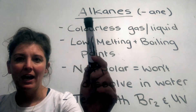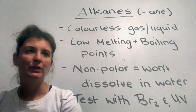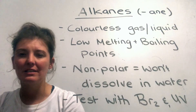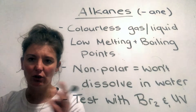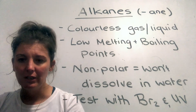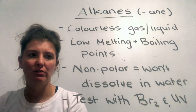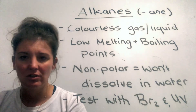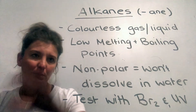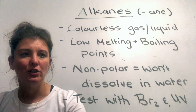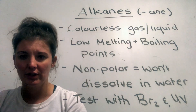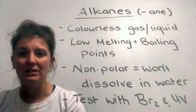In summary: Alkanes are the first group we've studied. They have the surname ending in '-ane'. They are colorless gases or liquids depending on their size. They have a low melting and boiling point. They are non-polar because they have no greedy atoms attached, meaning they are insoluble in water. The only reaction that takes place with Alkanes is with bromine water under UV light, and we can use that reaction as a test for identifying Alkanes.